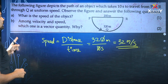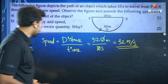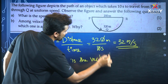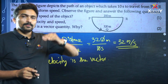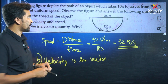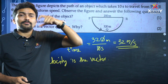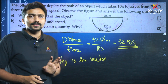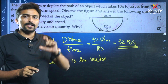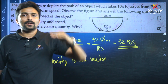Among velocity and speed, which one is a vector quantity and why? The answer is velocity is the vector quantity. If you are talking about speed and velocity, you can see displacement by time. The displacement is from starting point to ending point, the shortest distance. The displacement is straight, so the displacement is 200 m, and the velocity is 20 m per second.